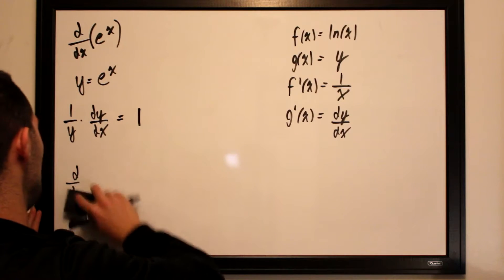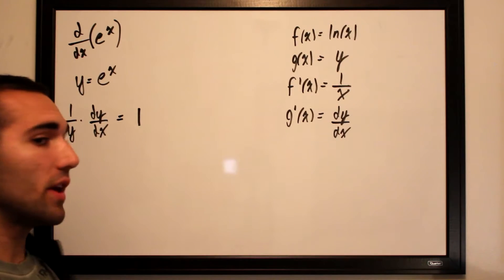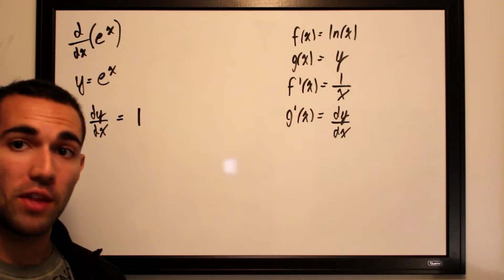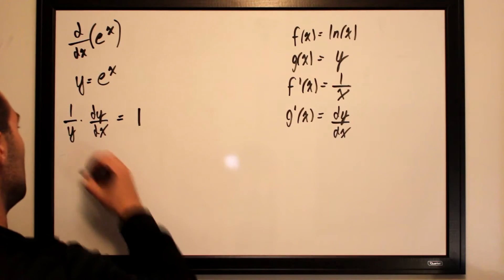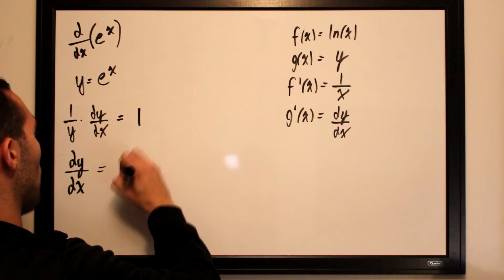Now what we want to do is isolate dy/dx. So we can multiply both sides of the equation by y, leaving us with dy/dx is equal to y.